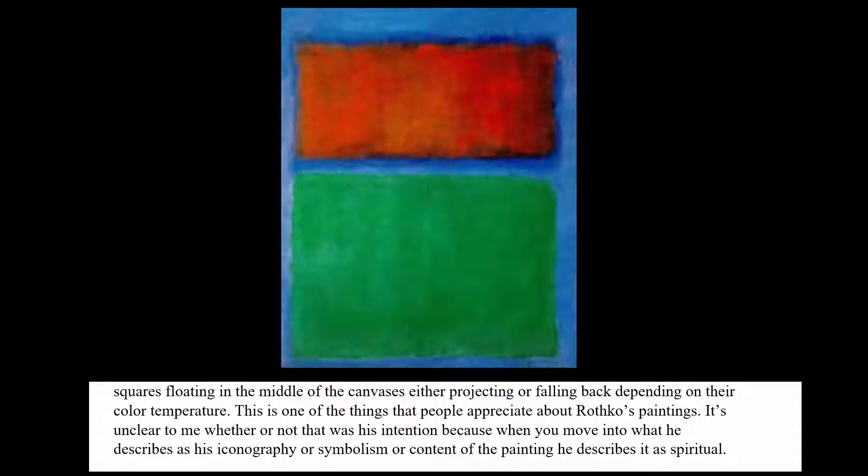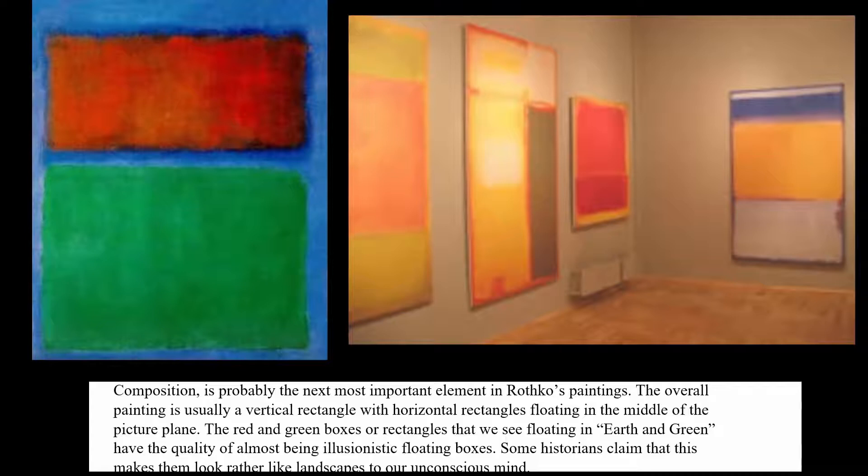Some historians — and Rothko would agree with this, which is why I'm bringing it up — say that he meant his paintings to be spiritual and to get at some sort of essential essence. This is in keeping with a lot of what people have been thinking about with Rothko in terms of his art, but we'll return to that later.